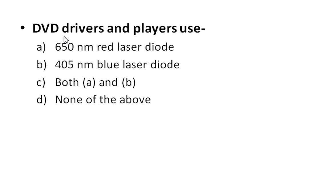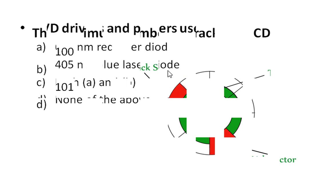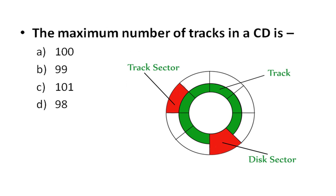DVD drivers and players use which technology or which diodes? The options are: A) 650 nanometer red laser diode, B) 405 nanometer blue laser diode, C) Both A and B, or D) None of the above. The right answer is B — 405 nanometer blue laser diode.